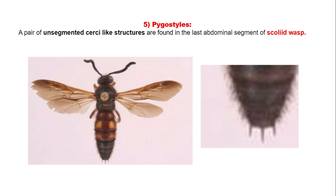Figostyles: a pair of unsegmented cerci-like structures found in the last abdominal segment of squalid wasps are known as figoStyles.